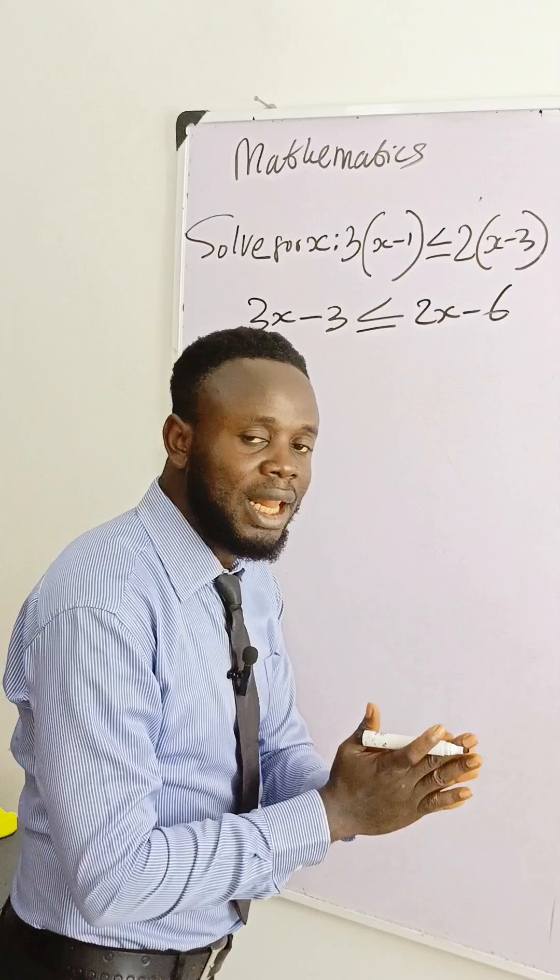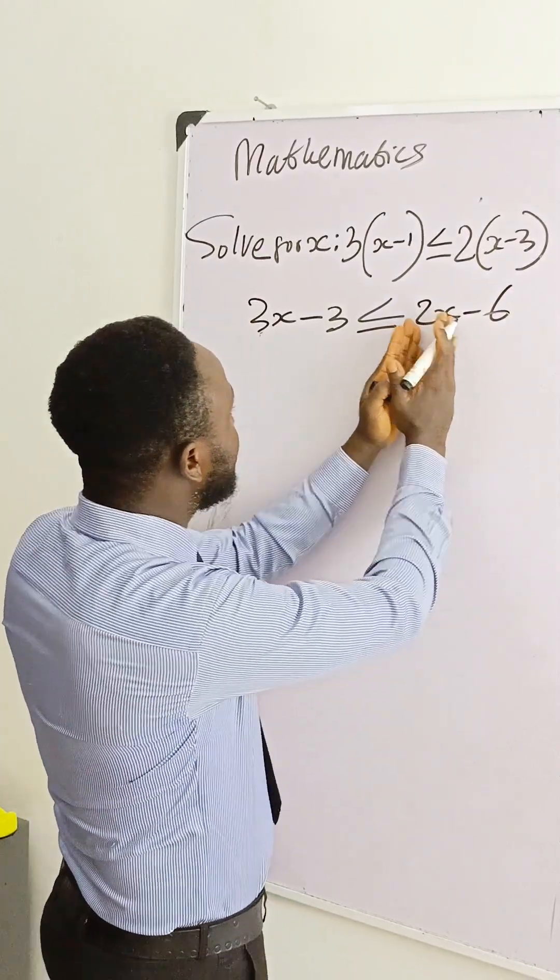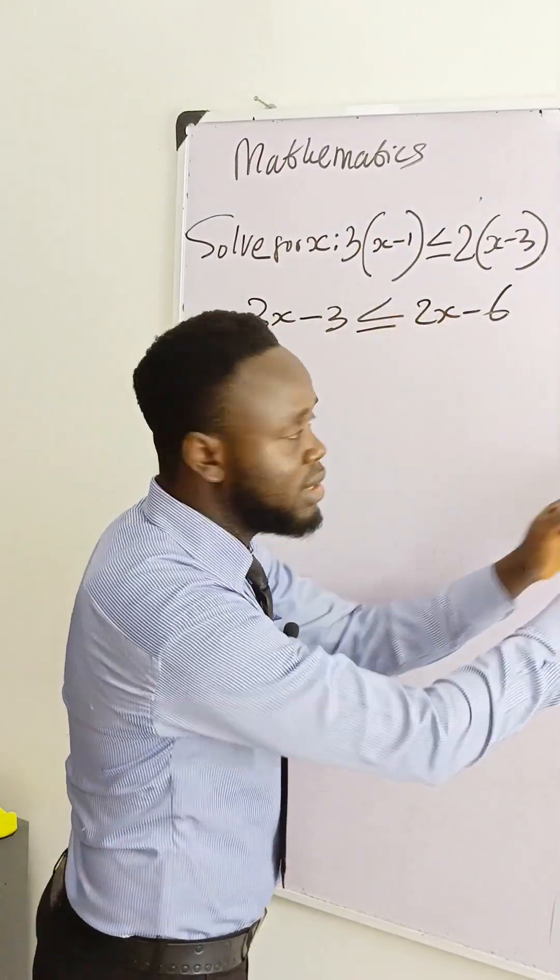For the next thing, we collect like terms. Let's carry x towards one side and minus 3 towards the other side.